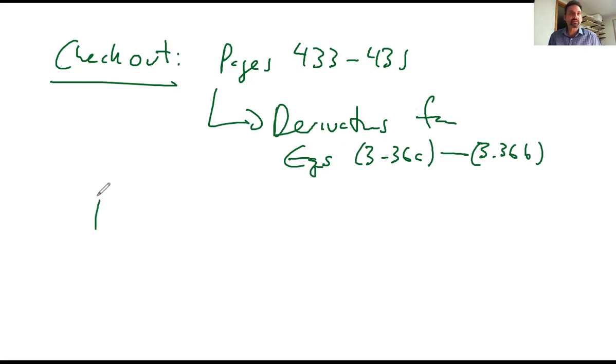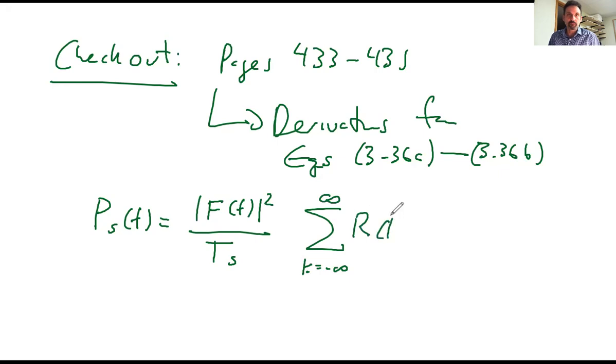So if anyone's interested, in Couch, check out equations, and this will give you the derivations for equations, very important. So I'm not going to derive them here. It will take quite a bit of time. Here is the magnitude squared of the frequency response of whatever your basic pulse shape is. And then multiply by the sum of the autocorrelation multiplied by e to the j 2 pi k f TS.